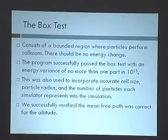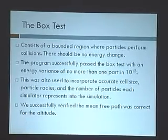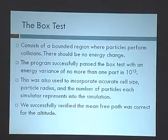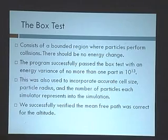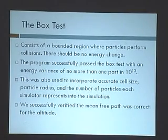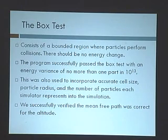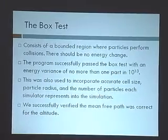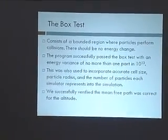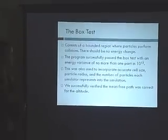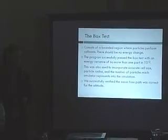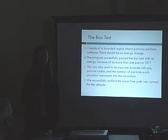One of the hardest tests we applied to the program is called the box test. You put all your molecules in a box with specular boundaries with gamma equal to 1, so it shouldn't lose any energy. The molecules collide with each other and with the box, and nothing should change. This actually revealed a whole bunch of bugs, and we finally got everything out and passed the box test with an energy variance of no more than one part in 10 to the 13th. Essentially, the computer was changing the velocities just slightly when things collided, but that was just machine accuracy — the equations were not wrong. We also used the box test to first incorporate things like proper cell size.